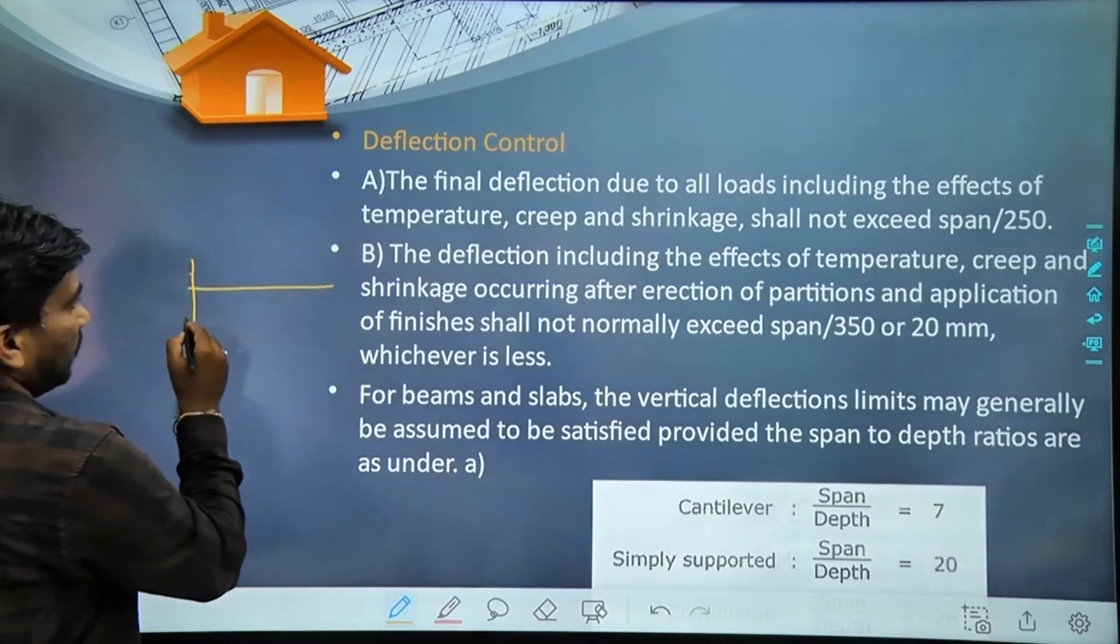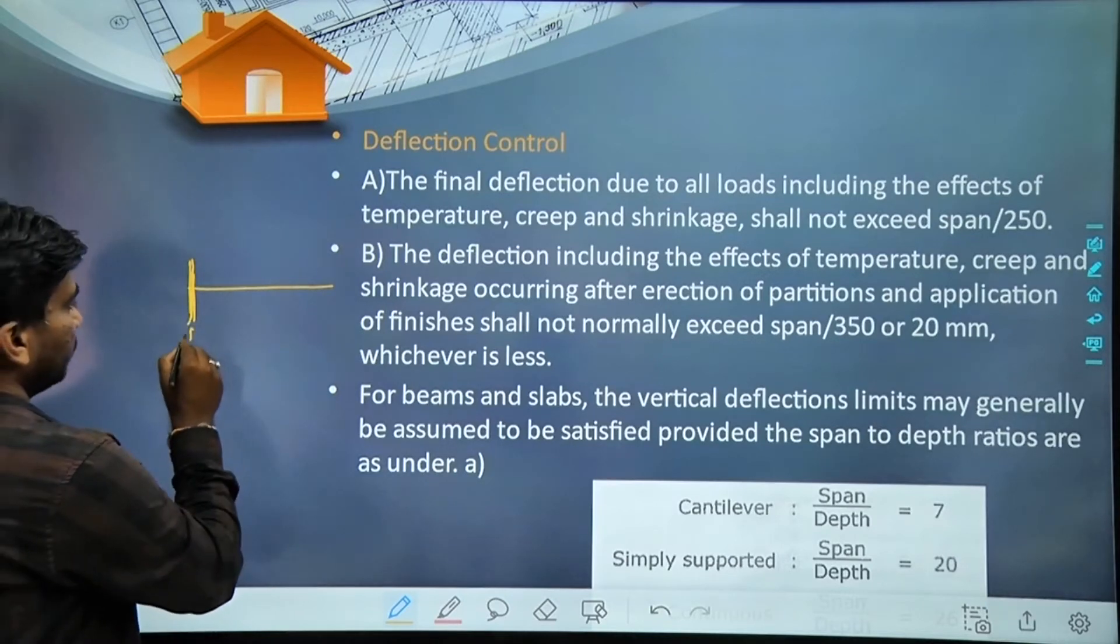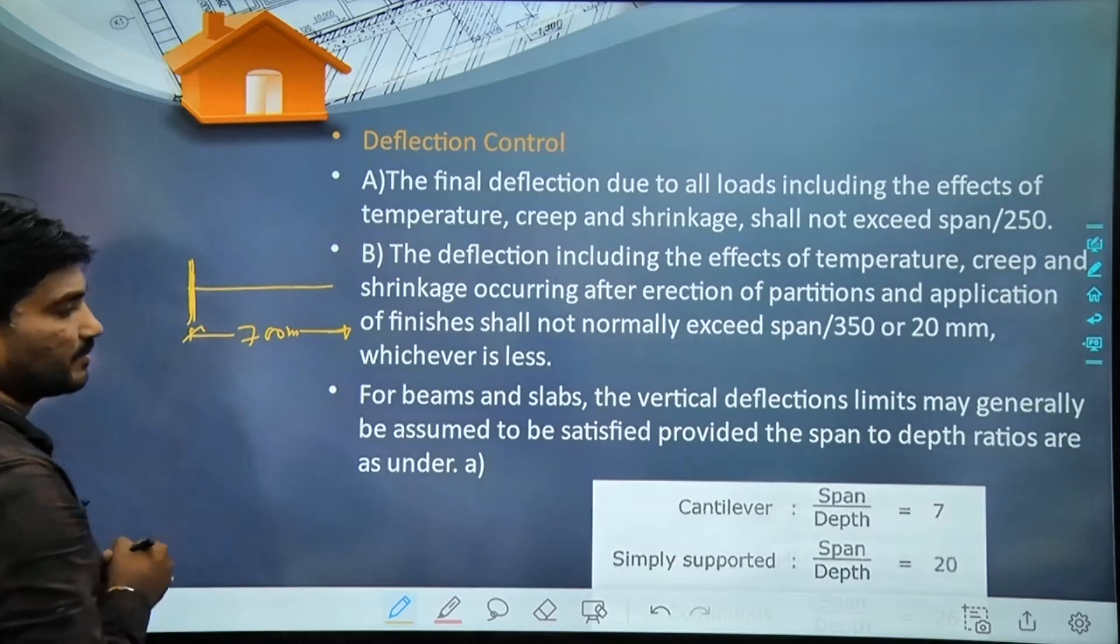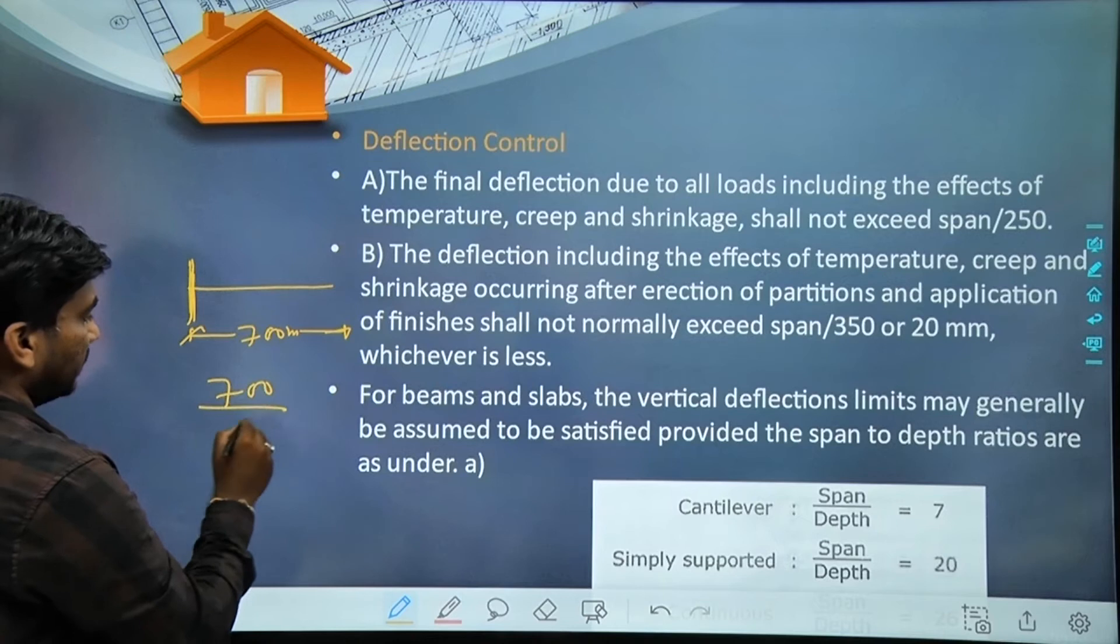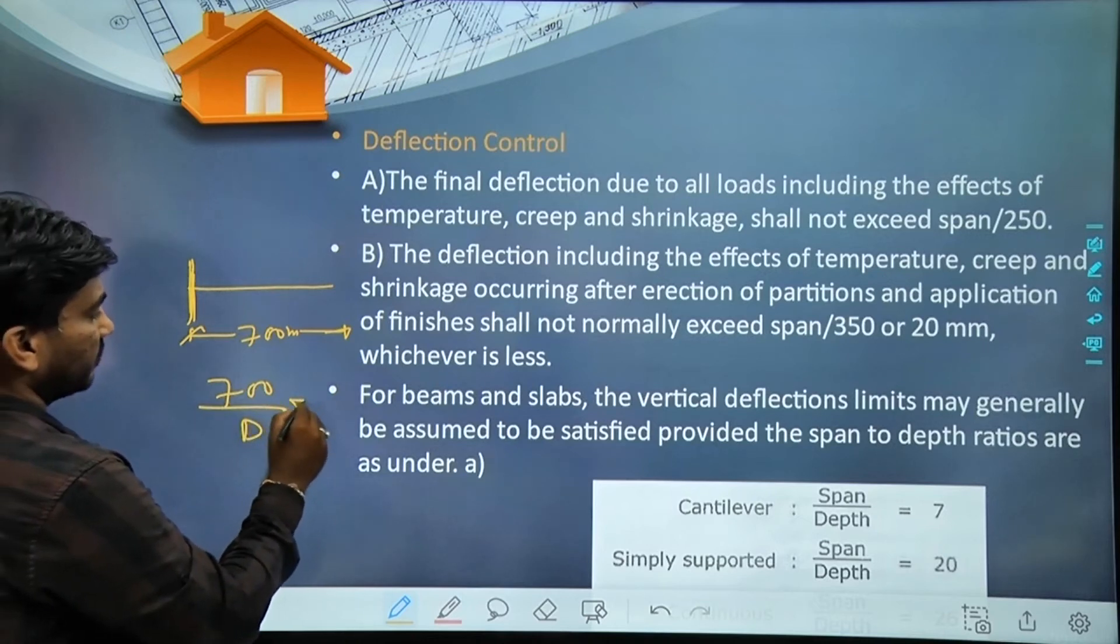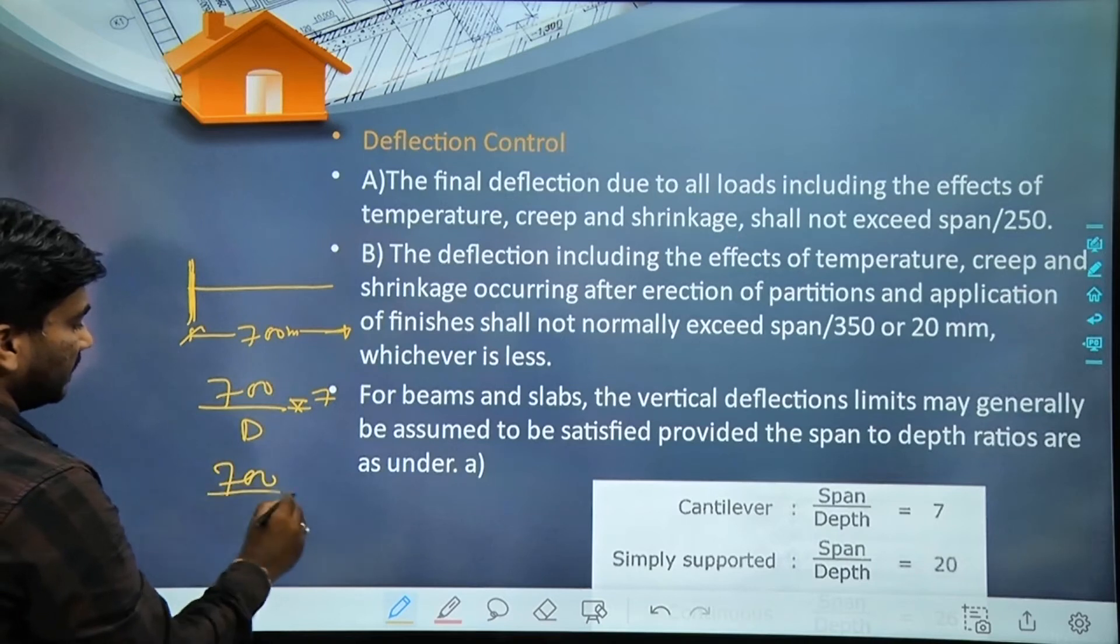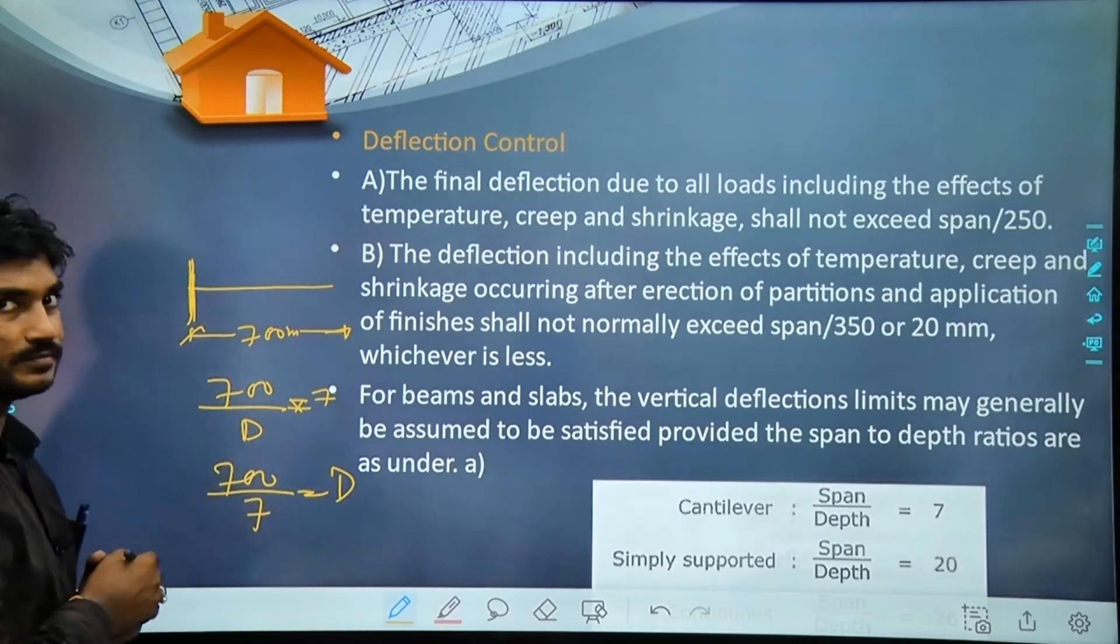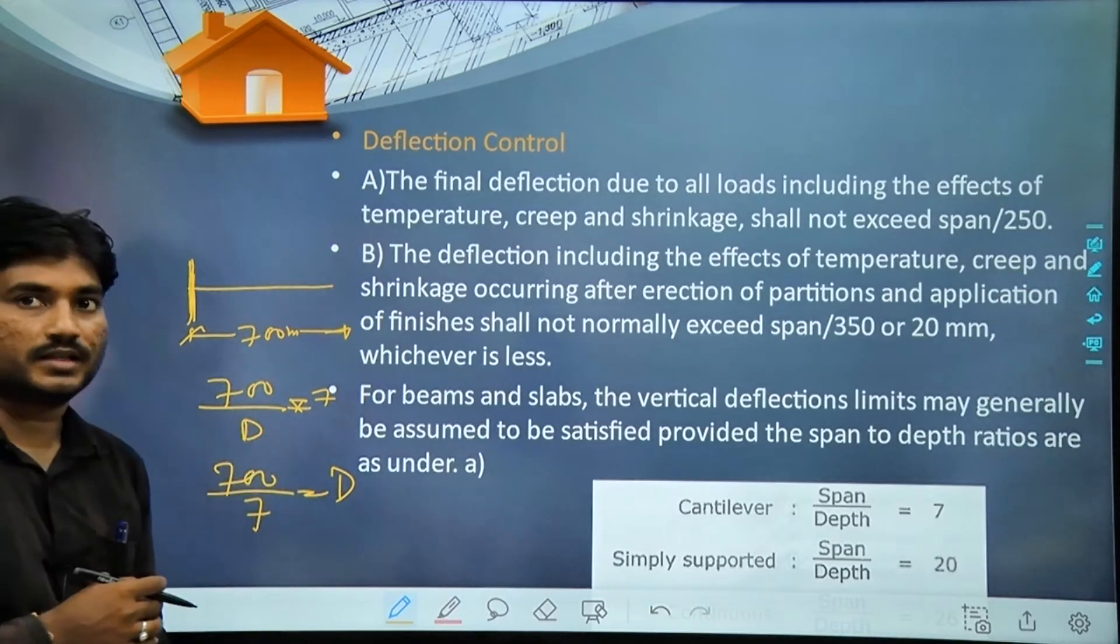And its length is, for example, say 700 mm divided by depth is equal to 7. So if we take depth to the other side, 700 divided by 7 is equal to depth, so this becomes 100 mm. Accordingly we can calculate this.